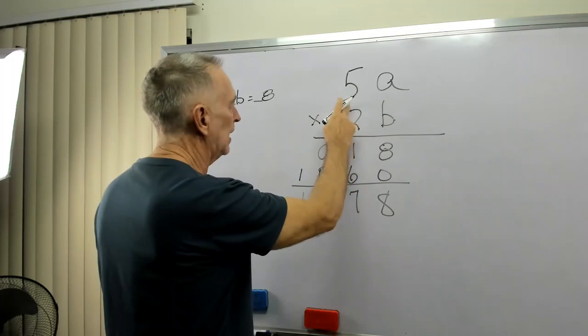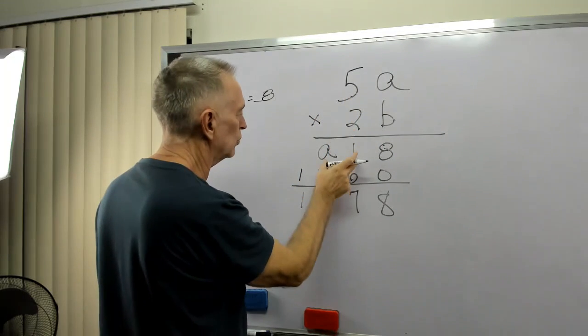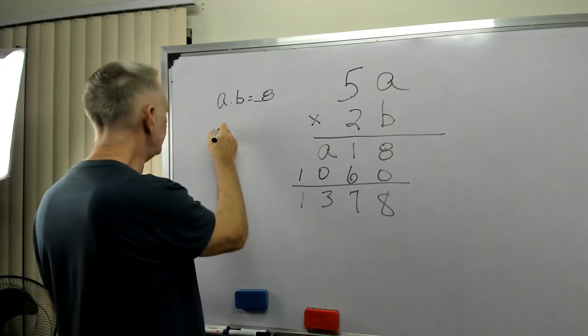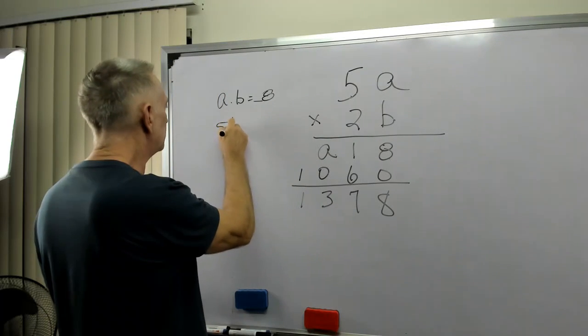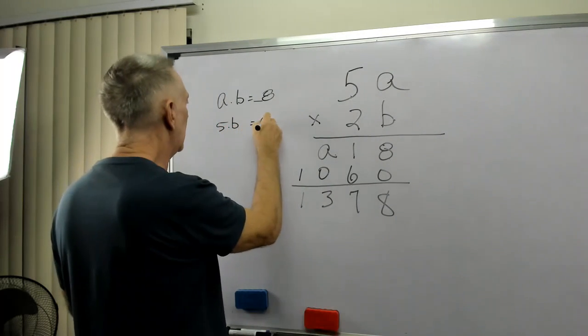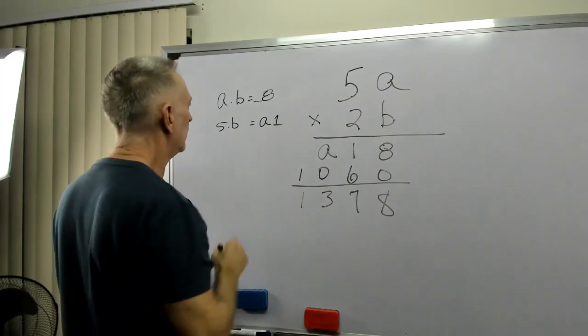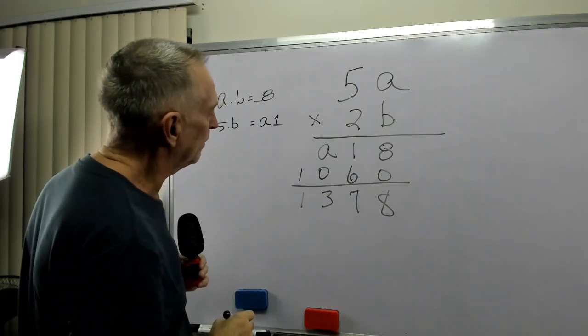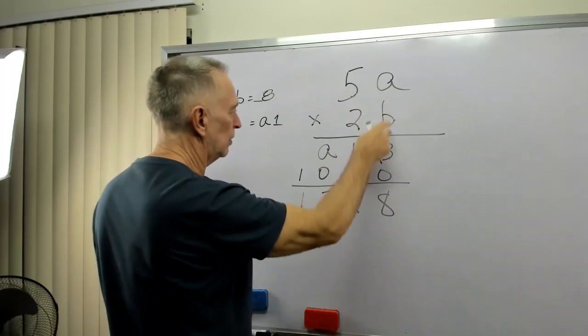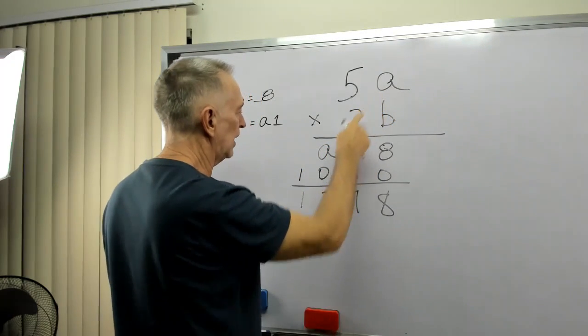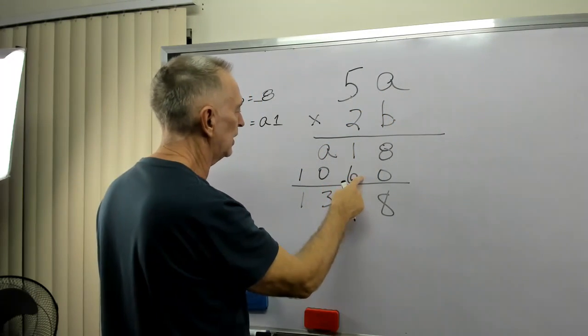So, 5 times B equals what? A1. 5 times B equals A1. Well, 2 times A, well, we bring our 0 down, then 2 times A equals 6.